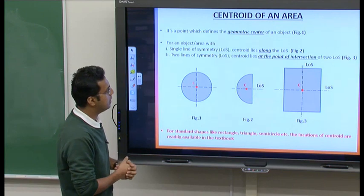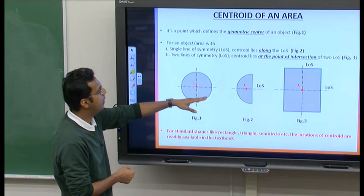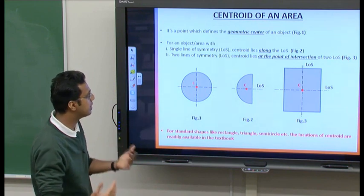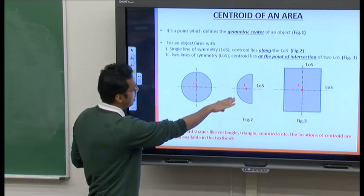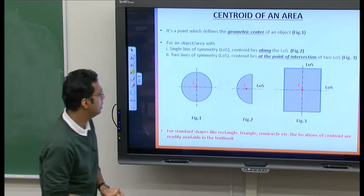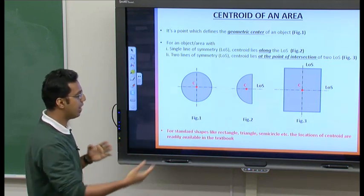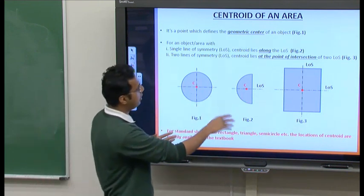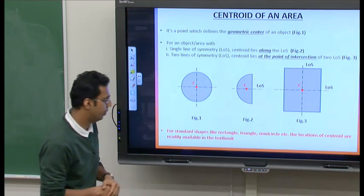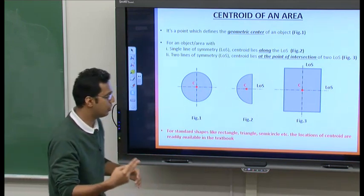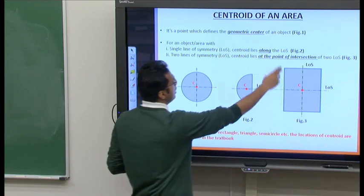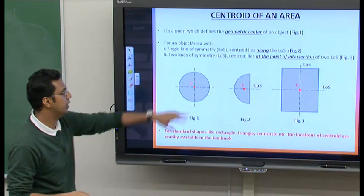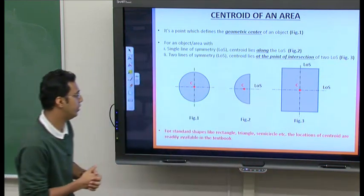Consider a semicircle as shown in figure 2, where the horizontal dashed line is the line of symmetry — the center of the semicircle lies somewhere along this line. For a rectangle as shown in figure 3, there are two lines of symmetry: one vertical and one horizontal. When an object has two lines of symmetry, their point of intersection represents the centroid — in this case point C is the centroid of the rectangle.